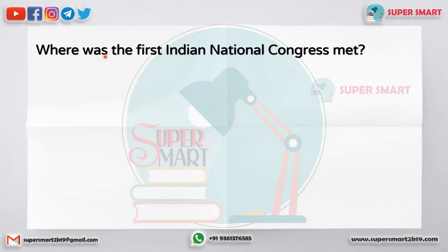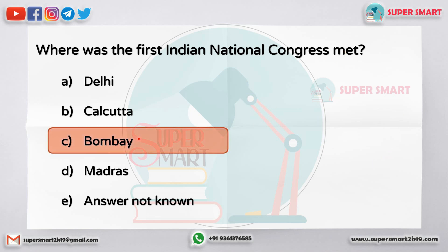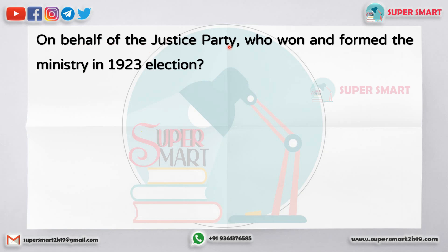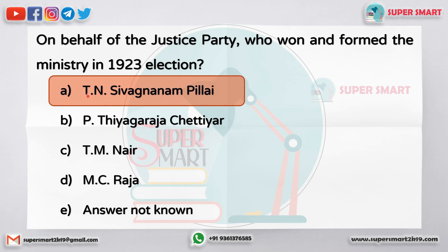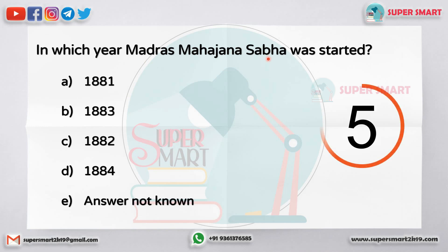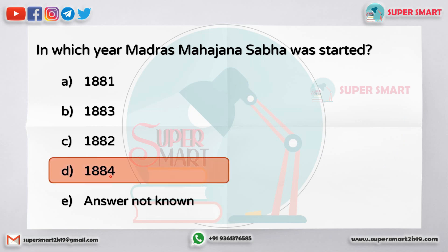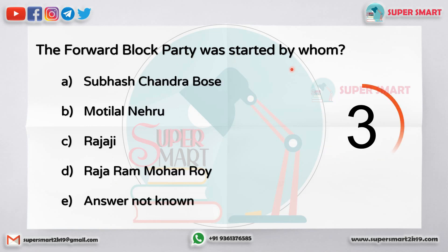Where was the first Indian National Congress met? The answer is Bombay. On behalf of the Justice Party, who won and formed the ministry in the 1923 election? The answer is T.N. Sivanyanam Pillai. In which year was Madras Mahajana Sabha started? The answer is 1884. The Forward Bloc party was started by Subhash Chandra Bose.